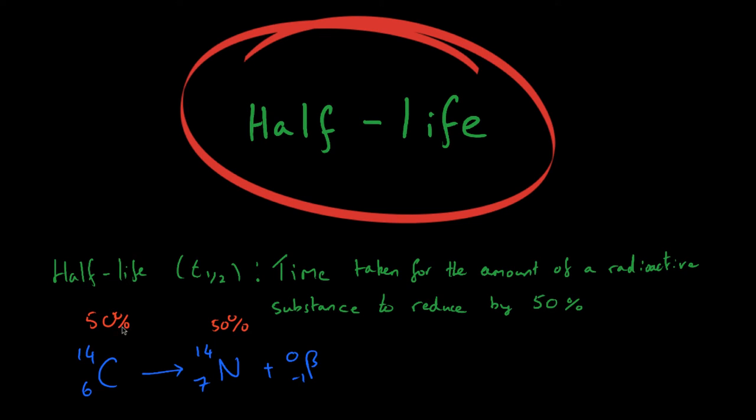...now the carbon doesn't go down to zero, it halves again. And so then you'd have 25% and now your nitrogen would obviously be 75%. Fast forward another half-life, you'd have 12.5% and 87.5%, and so on. So after your half-life, your amount of radioactive substance halves and halves and halves over and over again, rather than a set amount of it decaying in a set period of time.